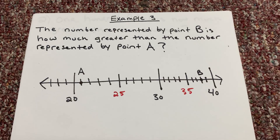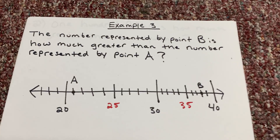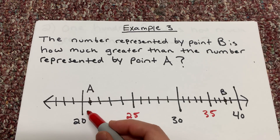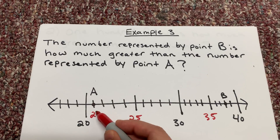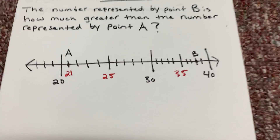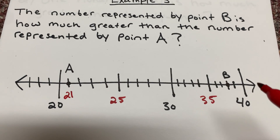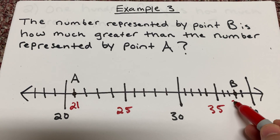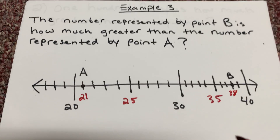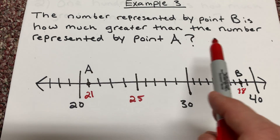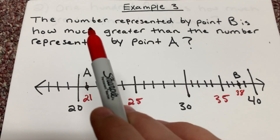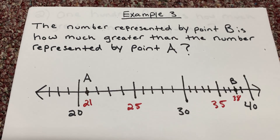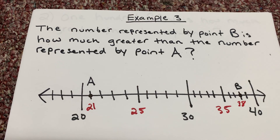Now let's find out what point A represents — it looks like point A is 21. Then we look at point B, which it looks like is 36, 37, 38. So point B is 38. Again, we've been talking about this — when we want to find which is greater, it tells us: the number represented by point B is how much greater than the number represented by point A?